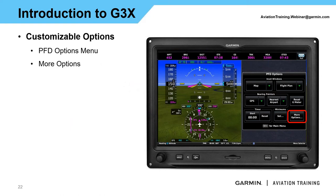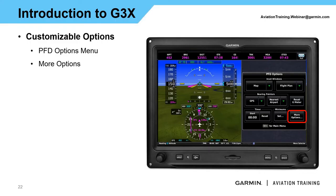Other basic options: there's a timer option — though a quicker way is simply pressing the timer on the PFD bottom bar. If we're flying approach minimums, this is also where we go to set that minimum — press the HSI, go to minimums, and off you go. For additional PFD options, we can go into 'more options.' We can also access this through the main menu by hitting menu twice, going to setup, and then PFD setup — but pressing the HSI and selecting more options is faster.